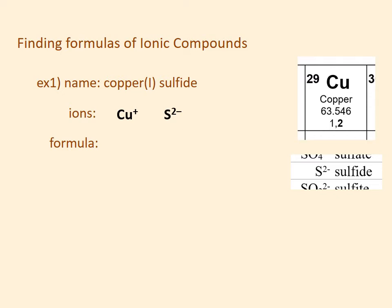The smallest number that 1 and 2 can both go into is 2. So to get a plus 2 I will need 2 coppers, and to get a minus 2 I need just 1 sulfide. Now I've got a plus 2 on the front and a minus 2 on the back. The formula for copper(I) sulfide is then Cu₂S.